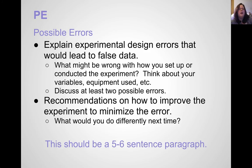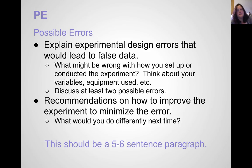The second part of the Possible Errors paragraph is recommendations on how to improve the experiment to minimize the error. So what would you do differently next time? Maybe you determined that you changed too many variables, so you might test things a little bit differently next time. The Possible Errors paragraph should be five to six sentences.